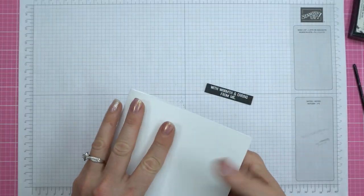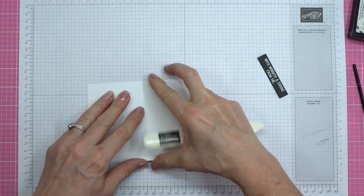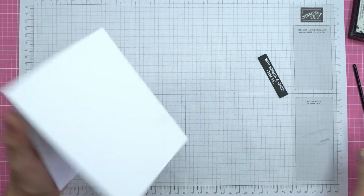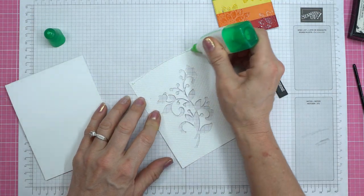I took an eight and a half by eleven thick whisper white and I cut it right down the center at four and a quarter. And then I scored it at five and a half. And then I can just use my bone folder to make sure I burnish that so it stays nice and folded.